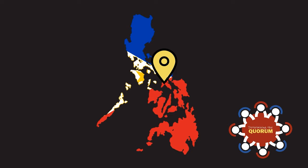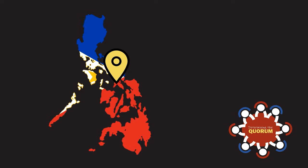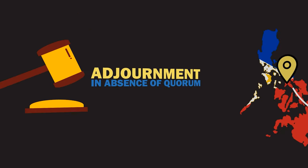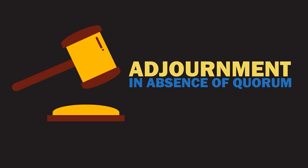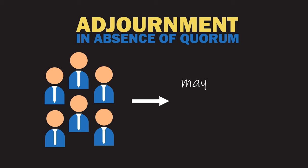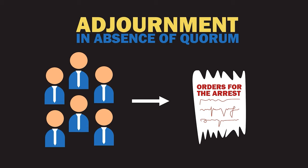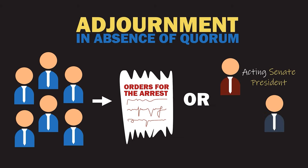In the absence of a quorum, a smaller number of members may postpone sessions from day to day. The present members can also issue orders for the arrest of absent members and choose an acting Senate President or acting Speaker as an emergency measure.